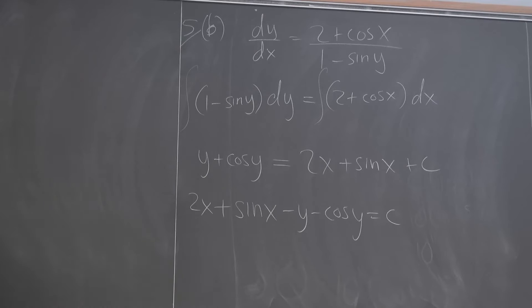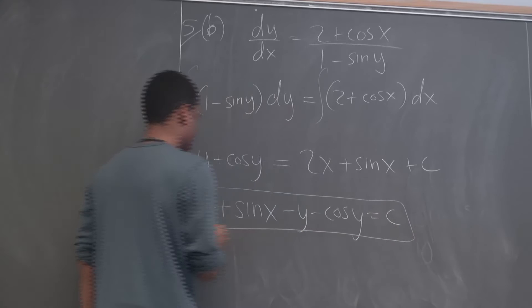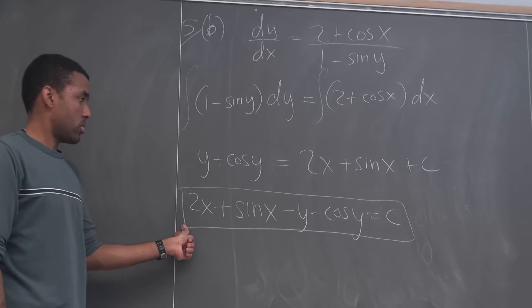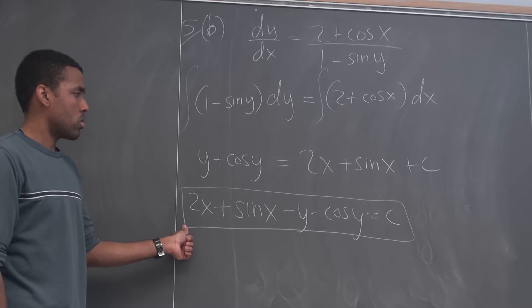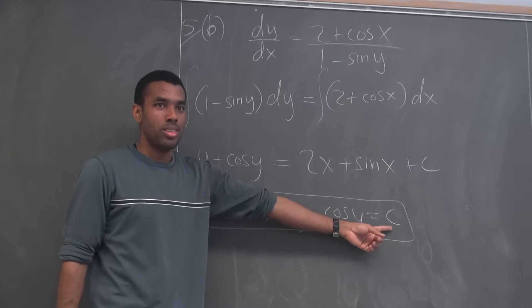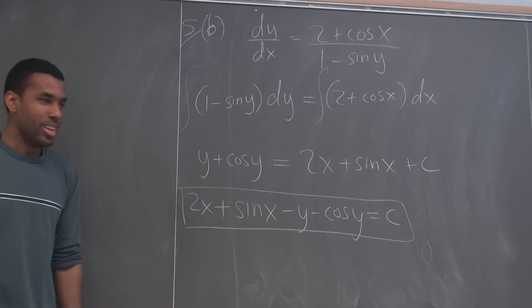Student asks for a pass on that. Professor: No. Student says they left it as 2x + sin x over cos y. Professor: 2x + sin x divided by cos y? Student clarifies they moved terms to the other side. Professor: So you moved y over and left it there — did you have a C? Student: Yes. Professor: That's fine. Any iteration of this equation — leaving the 2x on one side and bringing everything else to the other — I don't care, that's fine.